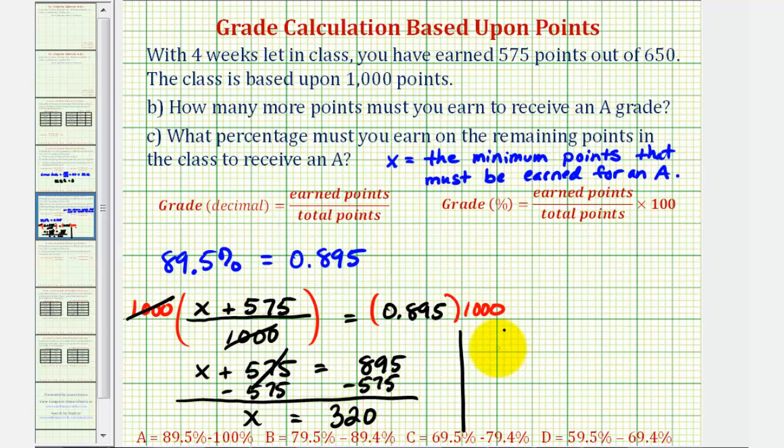Which means you must earn at least 320 points to receive an A. This is on top of the 575 points that you've already earned. Of course you could earn more than 320 points, but this is the minimum number of points that you must earn to receive an A in the class. If you earn exactly 320 points, you would receive the lowest A grade possible.